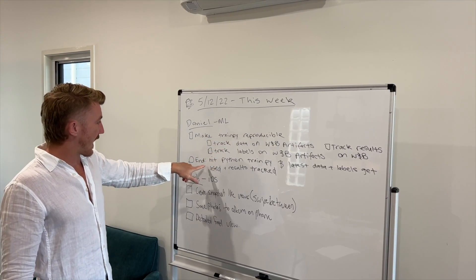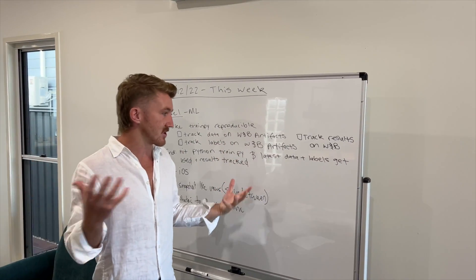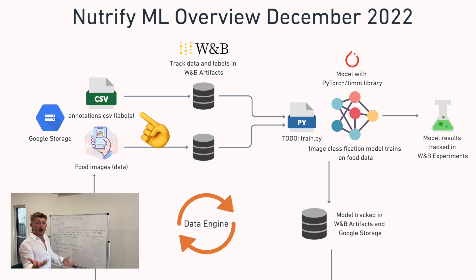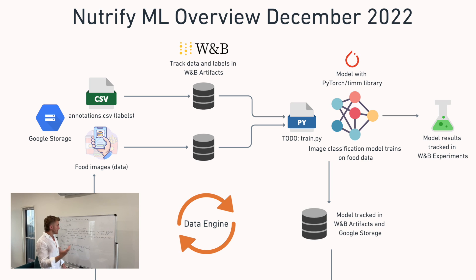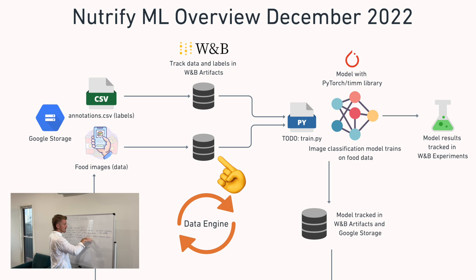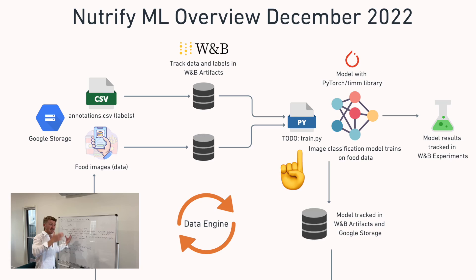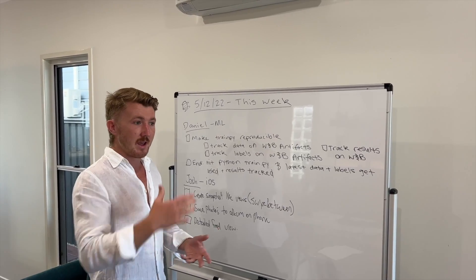I want to make a training.py script so that when I run Python train.py, the latest dataset — which is a bunch of food images on Google Storage — and labels, which is also a CSV file on Google Storage, gets used. The results get tracked on weights and biases, and I'm using weights and biases artifacts to track the latest data and labels. So if they change, it should feed into train.py.